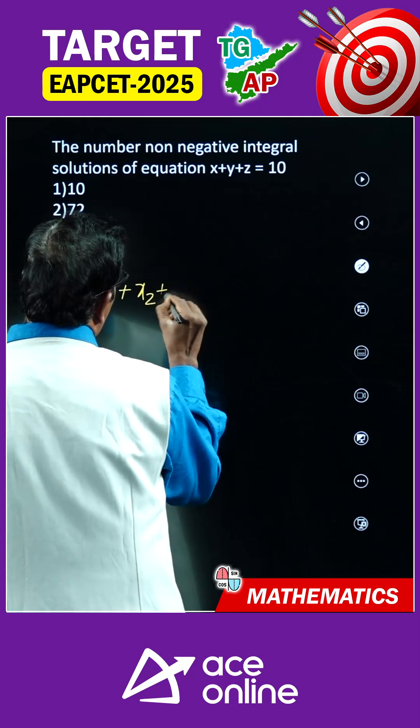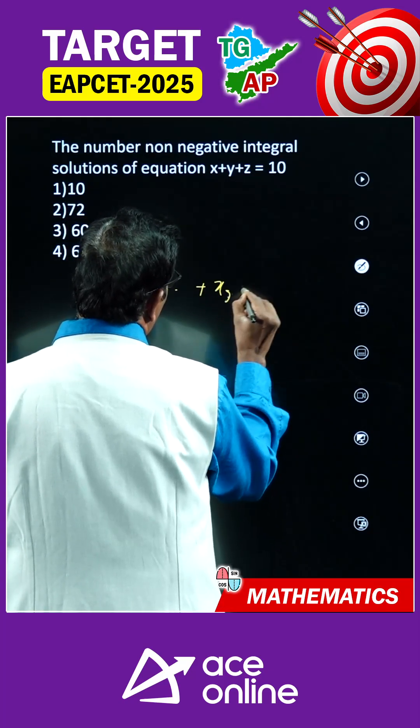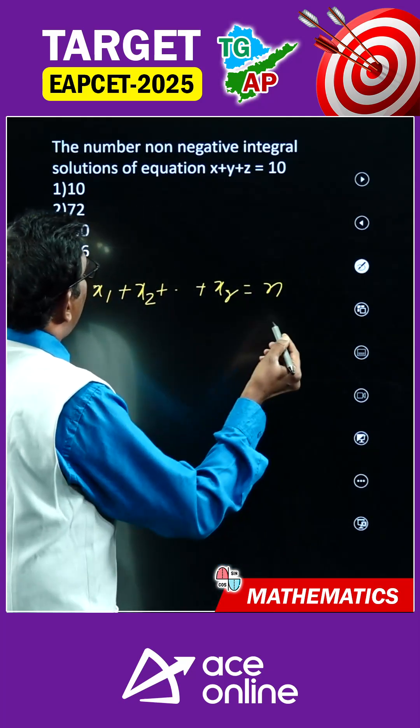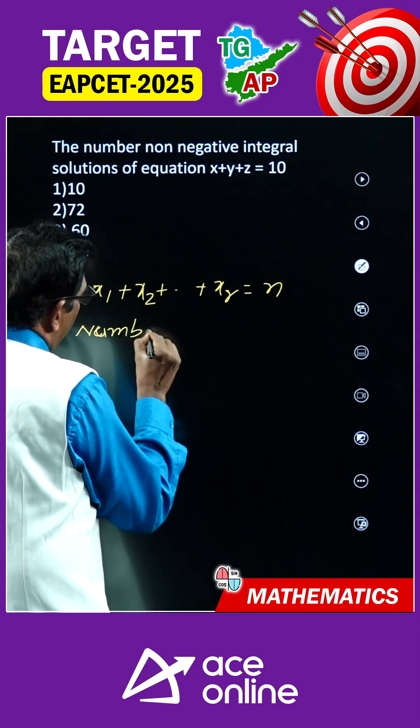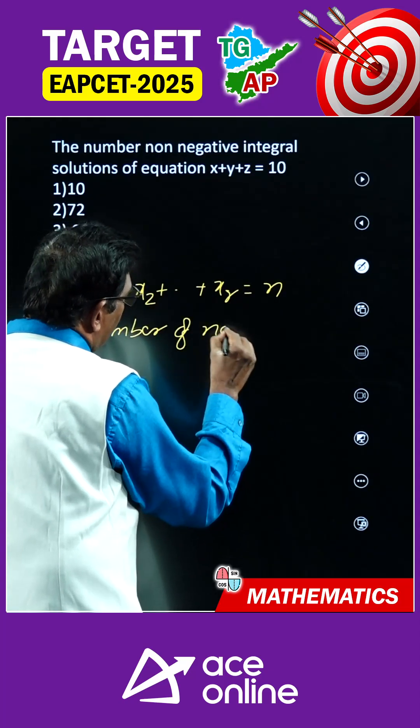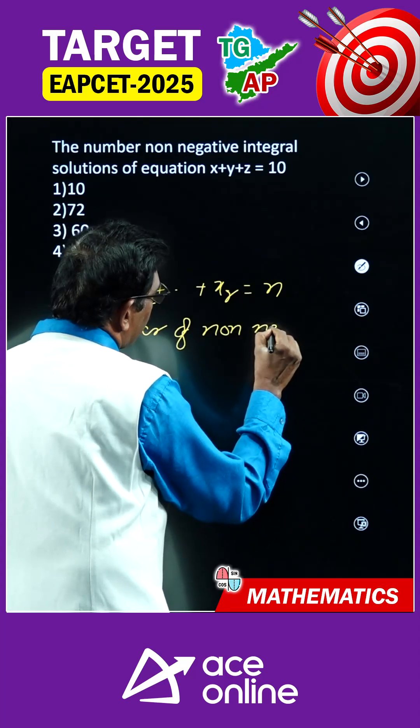Suppose an equation is like this: x1 plus x2 plus xr is equal to n. Number of non-negative integral solutions.